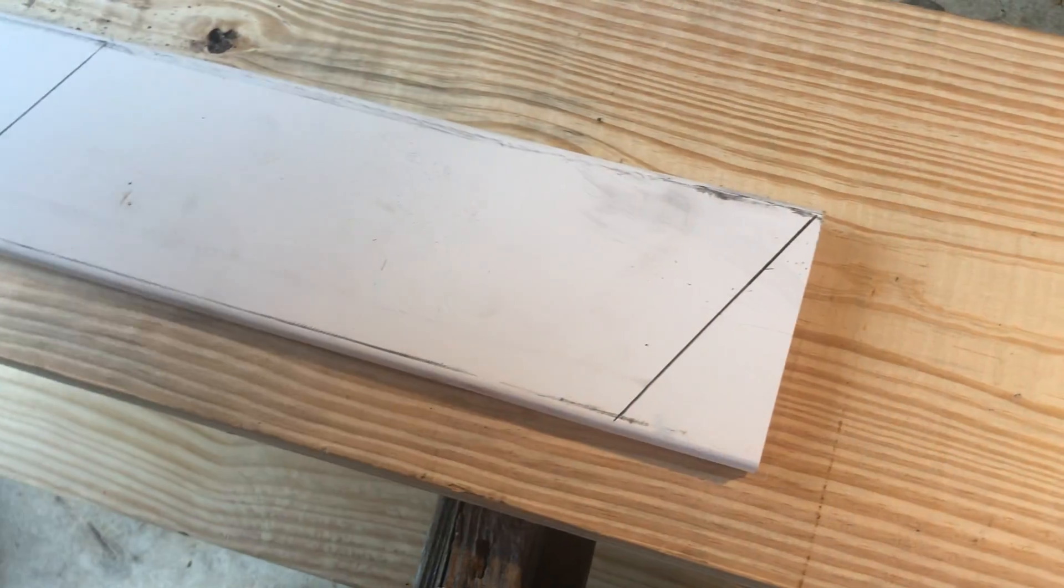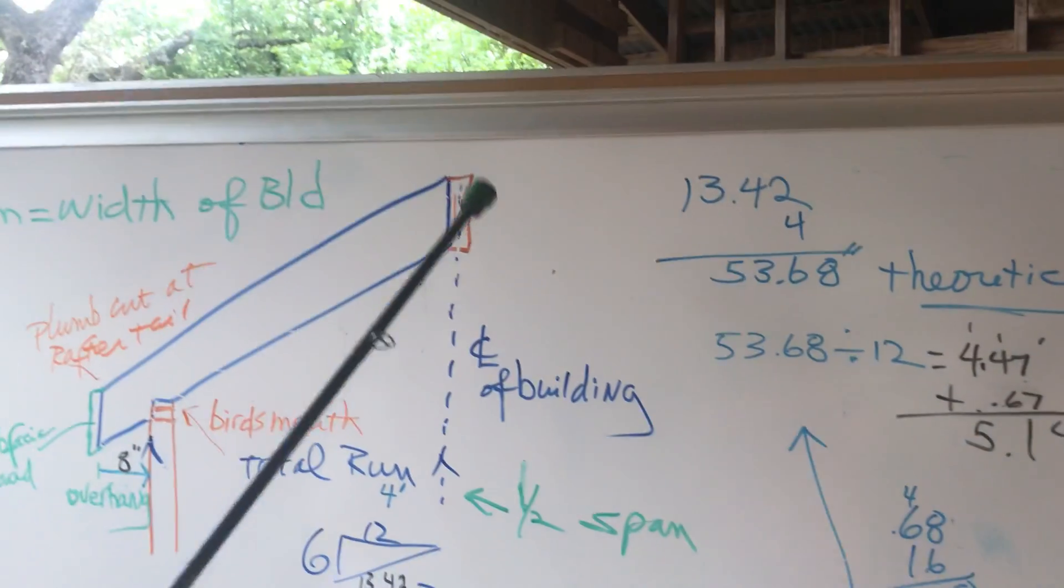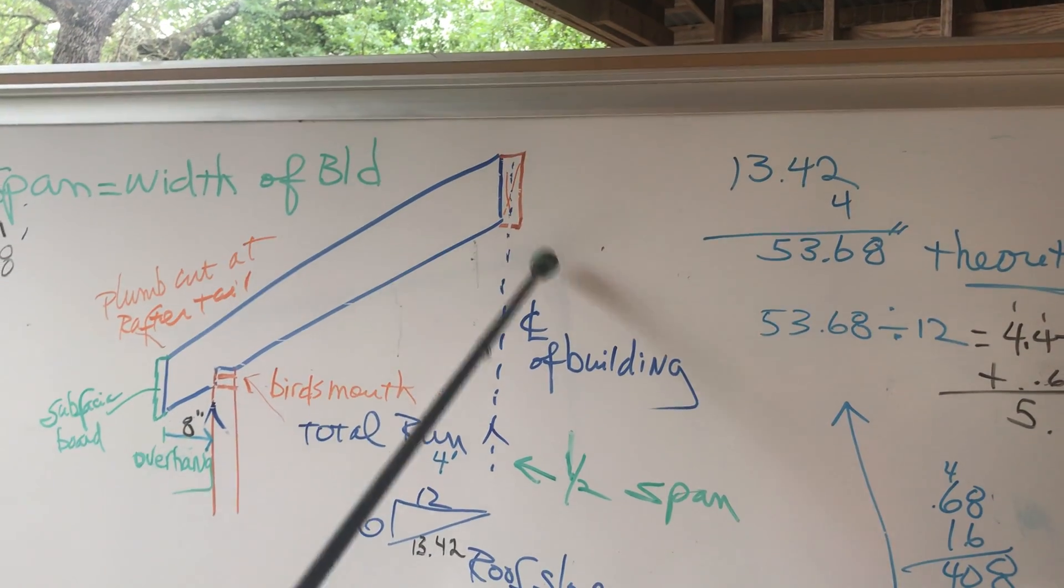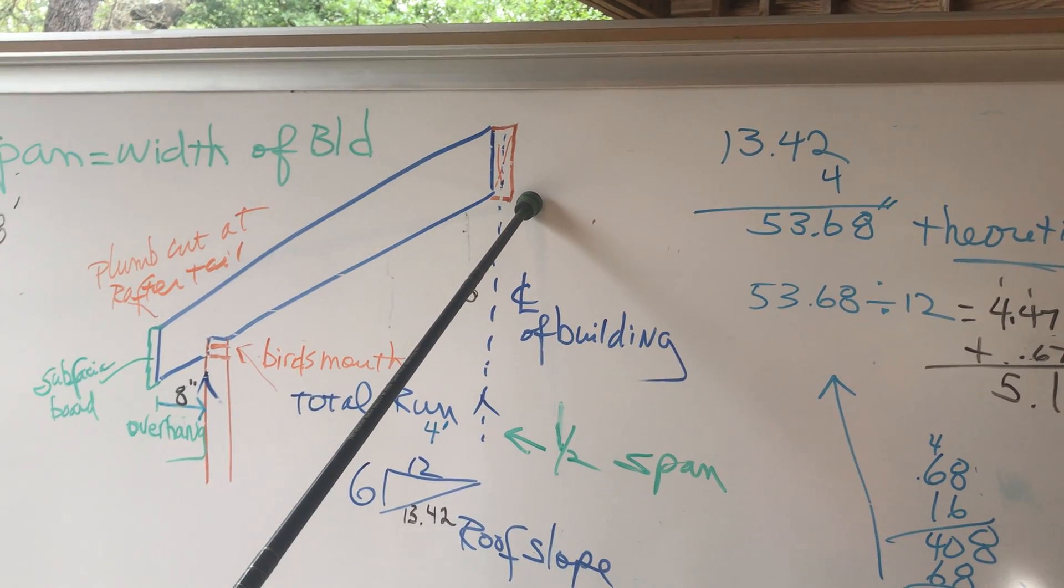I told you a while ago that that line right there was the center line of the building. And that's right here. So, there's something in there. That's an inch and a half 2 by 6 in there, or 2 by 8, possibly.